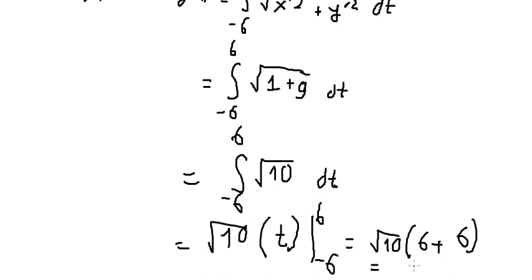So we get 2 multiplied by the square root of 10. 6 plus 6 is about 12. You get about 12 times the square root of 10. That's the end, thank you for watching.